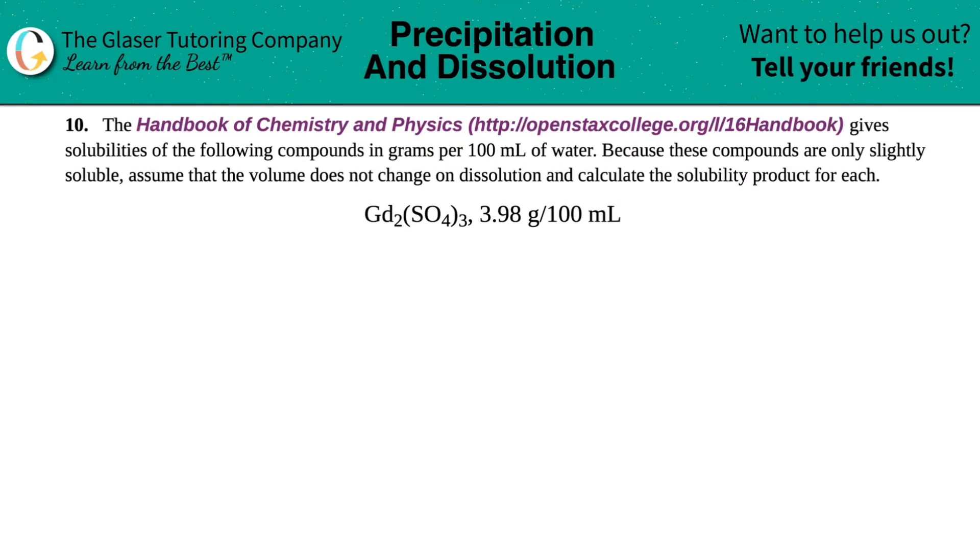Number 10. The handbook of chemistry and physics gives solubilities of the following compounds in grams per 100 mils of water. Because these compounds are only slightly soluble, assume that the volume does not change on dissolution and calculate the solubility product for each. We have to find the solubility product for Gd₂(SO₄)₃, and they tell us that the solubility of that compound is 3.98 grams per 100 mils.